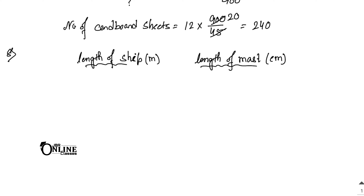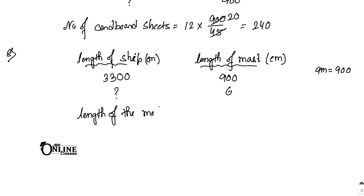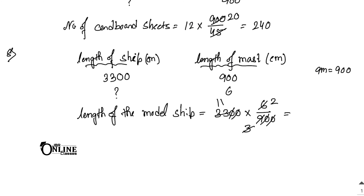The actual ship's mast is 9 meters, which equals 900 centimeters. The ship's length is 33 meters, which equals 3300 centimeters. For the model, the mast length is 6 centimeters and we need to find the model ship's length. Length of model ship equals 3300 multiplied by 6 divided by 900. Simplifying: 3 twos are 6, 3 threes are 9, giving 11 multiplied by 2, which equals 22 centimeters. So 22 centimeters is the answer.